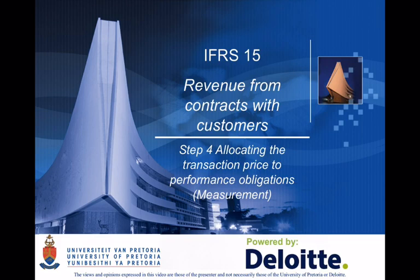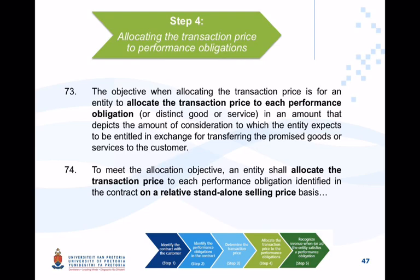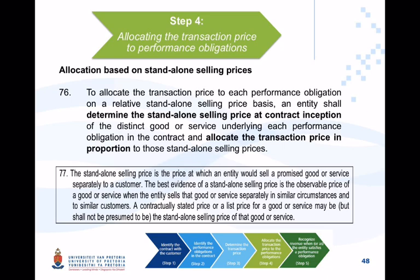Now you need to allocate that transaction price to the various performance obligations identified in Step 2. The transaction price is allocated to these various performance obligations based on the relative standalone selling prices of each obligation, as they would usually be sold in individual transactions on their own.